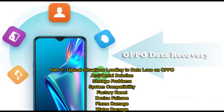Part 1: Typical situations leading to data loss on Oppo. Accidental deletion. Storage problems. System compatibility. Factory reset. Device failures. Phone damage. Water damage.